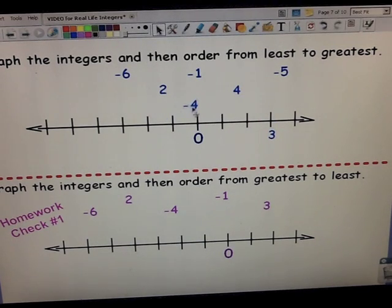Negative 4, we start at 0. It's negative. It's less than 0, so it goes to the left 4 units. So negative 4 would go right here. Negative 6, it's negative, less than 0, so it goes to the left 6 units. Here's negative 6.